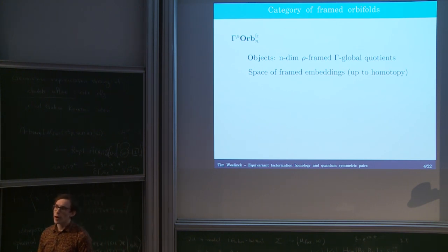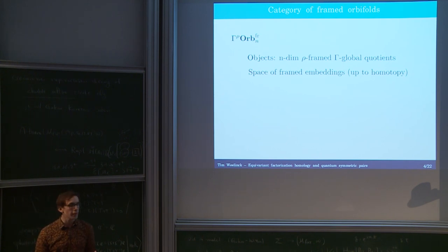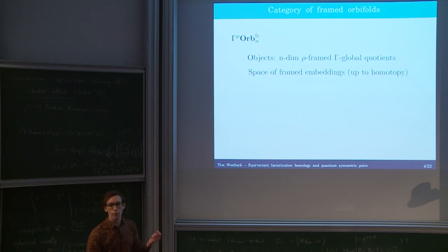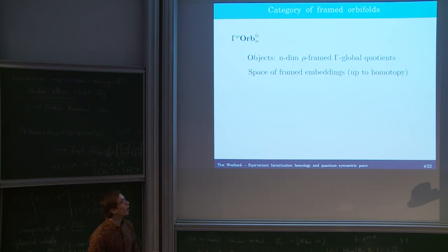To obtain invariants, we're going to think about these orbifolds as glued out of simple pieces. For manifolds there's of course only one local piece needed, namely the disk R^n. But for orbifolds locally, points might look very differently, and this is completely determined by the isotropy group, once we have a fixed representation that controls the global geometry.